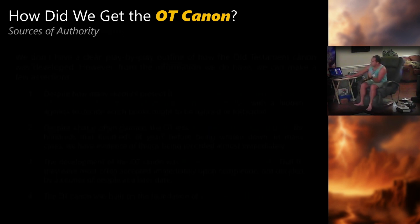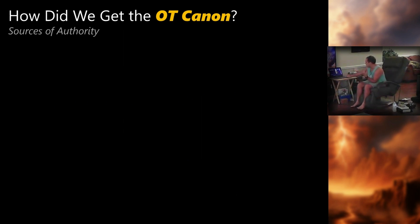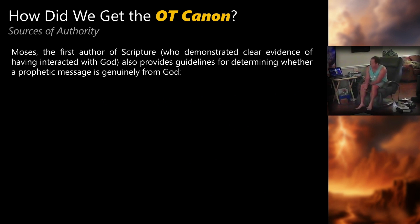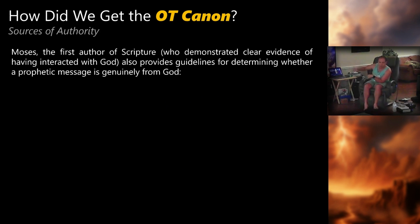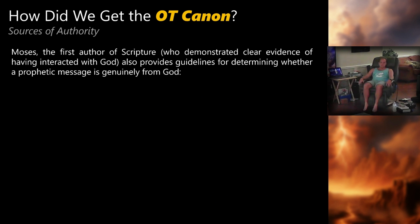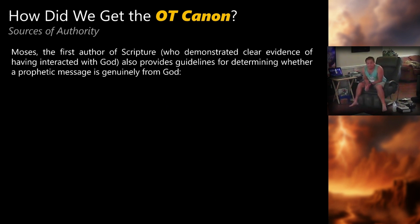Let's talk about sources of authority and what it means to be a prophet. Moses, the first author of scripture, also provides guidelines for determining whether a prophetic message is genuinely from God. What do I mean when I say Moses demonstrated clear evidence of having interacted with God? The people of Israel had very visual, physical evidence — his face shone coming down from the mountain. If you think about the events Moses was there for, these were the most public acts of God in the history of the universe, even to this day.